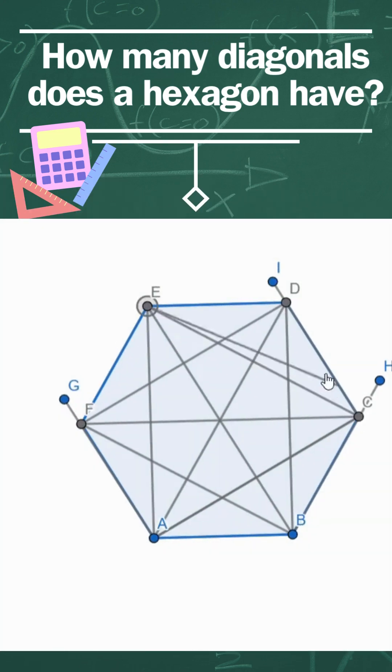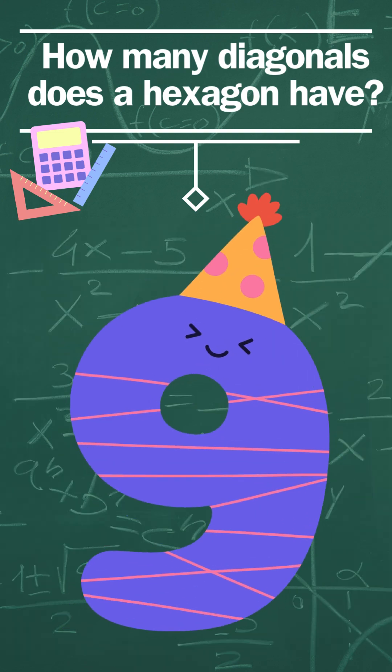We continue this way for every vertex, counting only unique diagonals. And the total number of diagonals in a hexagon is nine.